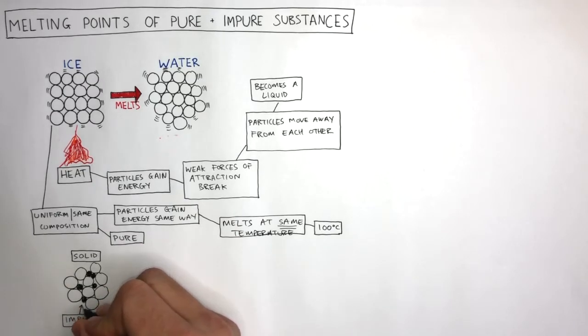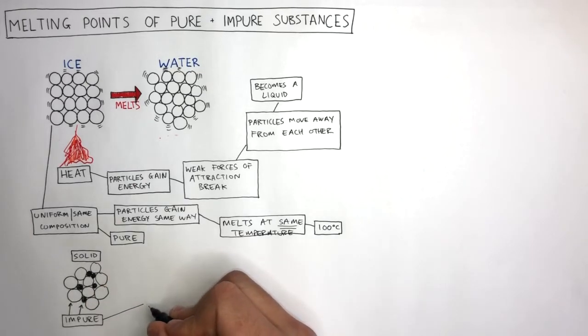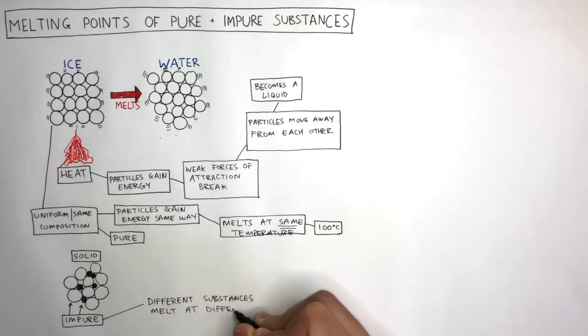These two different substances will have different physical properties, such as different boiling points. This means these different substances melt at different temperatures.